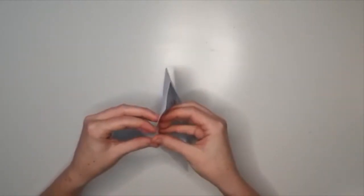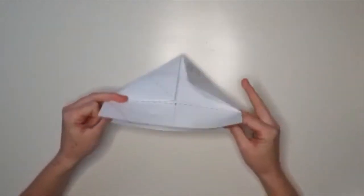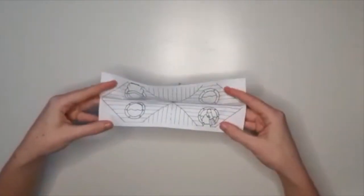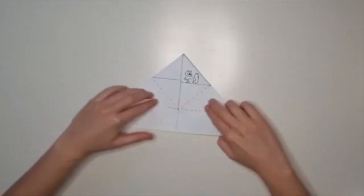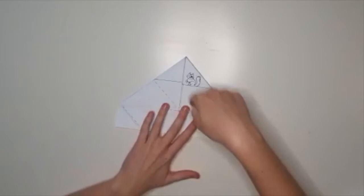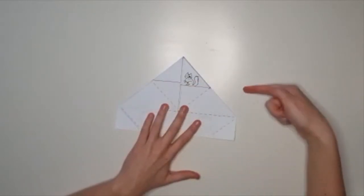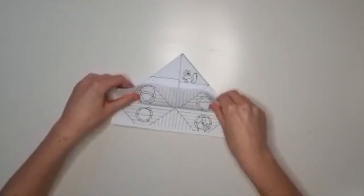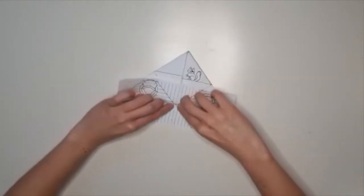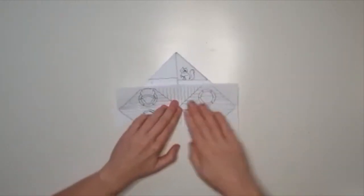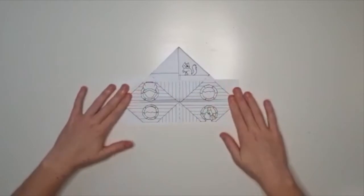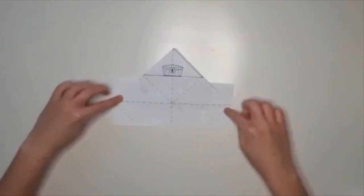Now you want to take the flaps at the bottom of the boat shape so far, like this, and fold across this line, like so. Be careful to only fold one flap at a time, not both together, and do the same with the other flap.